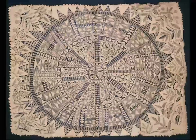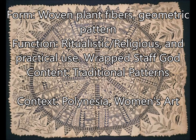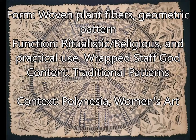This is called the Tapa, also known as Hayapo. For form, this is woven plant fibers from palm trees or reeds, and it contains those geometric patterns that are so prominent in Pacific cultures, especially seen from the Lapita fragments. For function, this is ritualistic, religious, and also practical — we see Pacific Islanders wearing the Tapa for special occasions, but also the staff god was wrapped in this cloth as a symbol of protection by the community. The traditional patterns are chosen from a long history of creating these, and it was made by all the women of the community — a communal effort. This is found all over Polynesia, so for context, write Polynesia, women's art, and that communal group effort.